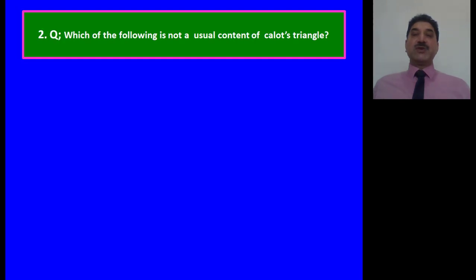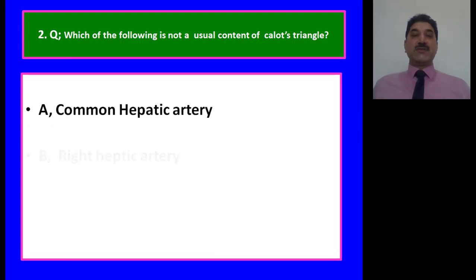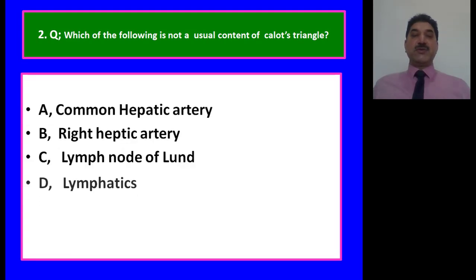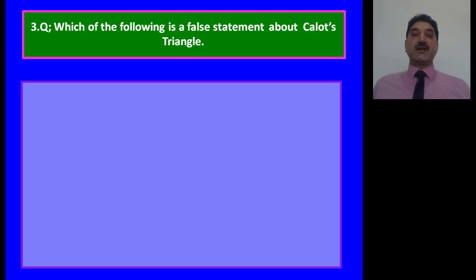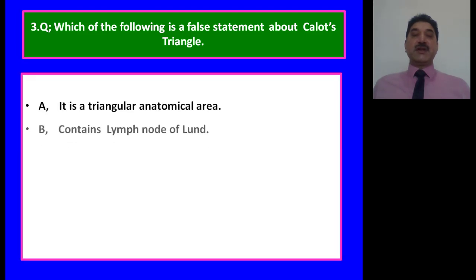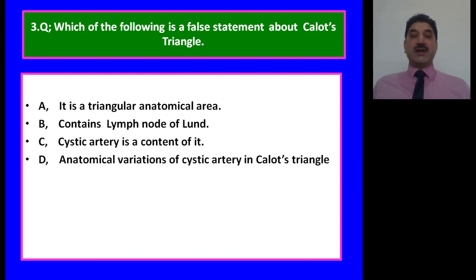Which of the following is not a usual content of Calot's triangle? Options: common hepatic artery, right hepatic artery, lymph node of Lund, lymphatics. The answer is A — common hepatic artery is not a usual content. Which of the following is a false statement about Calot's triangle? Options: it is a triangular anatomical area; it contains the lymph node of Lund; the cystic artery is a content; anatomical variations of the cystic artery in Calot's triangle are very rare. The answer is D — variations are not rare; they are very common.